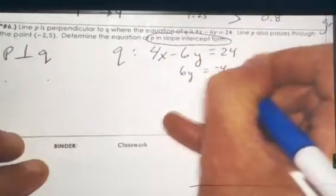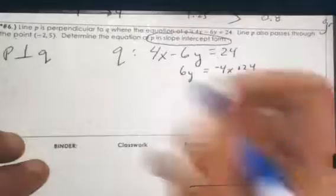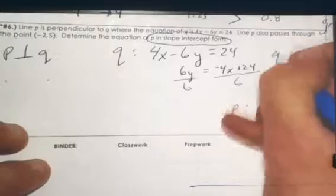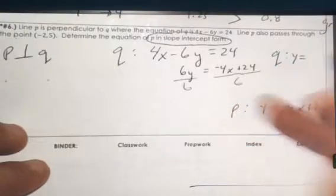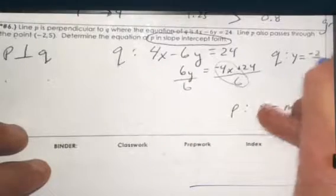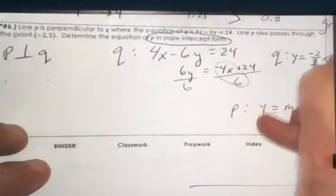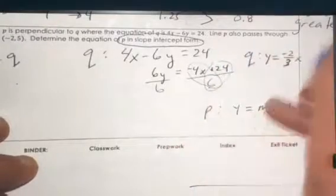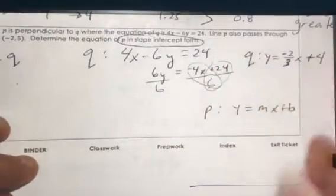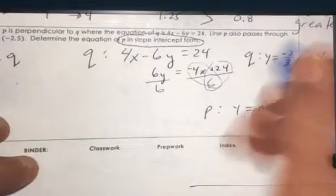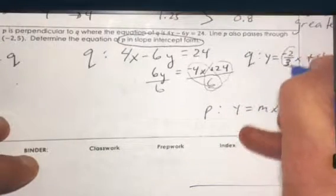We get negative 6y equals negative 4x plus 24. Then let's divide by 6. So for Q, we are getting y equals negative 4/6x, or negative two-thirds x, plus 4. So now we see the slope of Q is negative two-thirds.